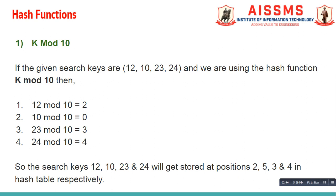The mod operation returns the remainder of two numbers, so if we divide 12 by 10 the remainder is 2. Similarly, 10 mod 10 gives 0, 23 mod 10 gives 3, and 24 mod 10 gives 4. So the search keys 12, 10, 23, and 24 will get stored at positions 2, 0, 3, and 4 in the hash table respectively, and the resulting hash table would look like this.